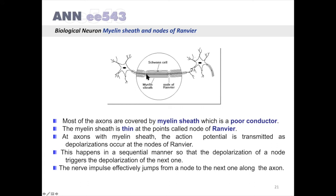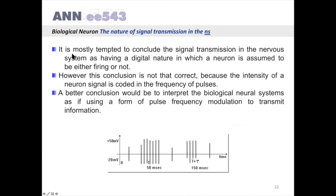It is mostly tempted to conclude the signal transmission in the nervous system as having a digital nature in which a neuron is assumed to be either firing or not. However, this conclusion is not that correct.